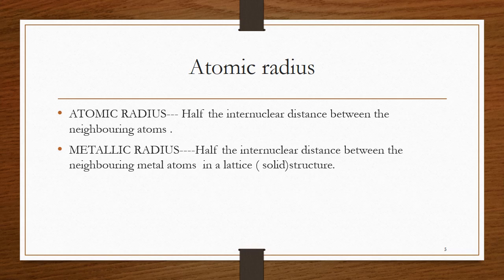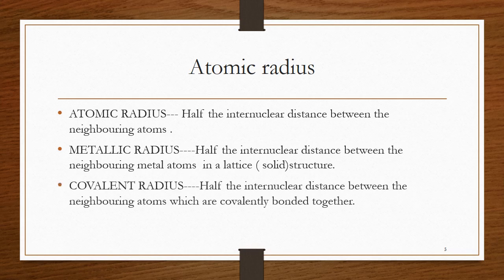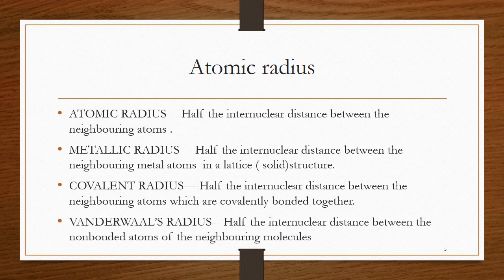What is meant by lattice? A lattice is a solid structure wherein the metal atoms are arranged at fixed positions. Covalent radius is particularly used for non-metals — it is half the internuclear distance between neighboring atoms that are covalently bonded together. Van der Waals radius is half the internuclear distance between the non-bonded atoms of neighboring molecules.